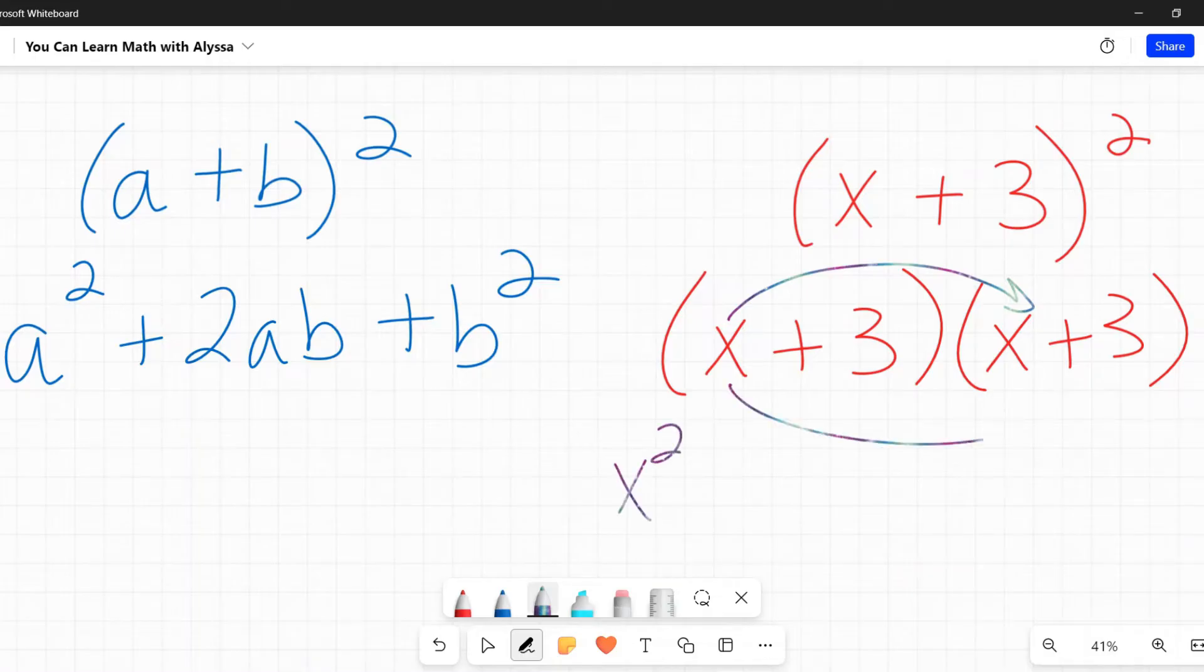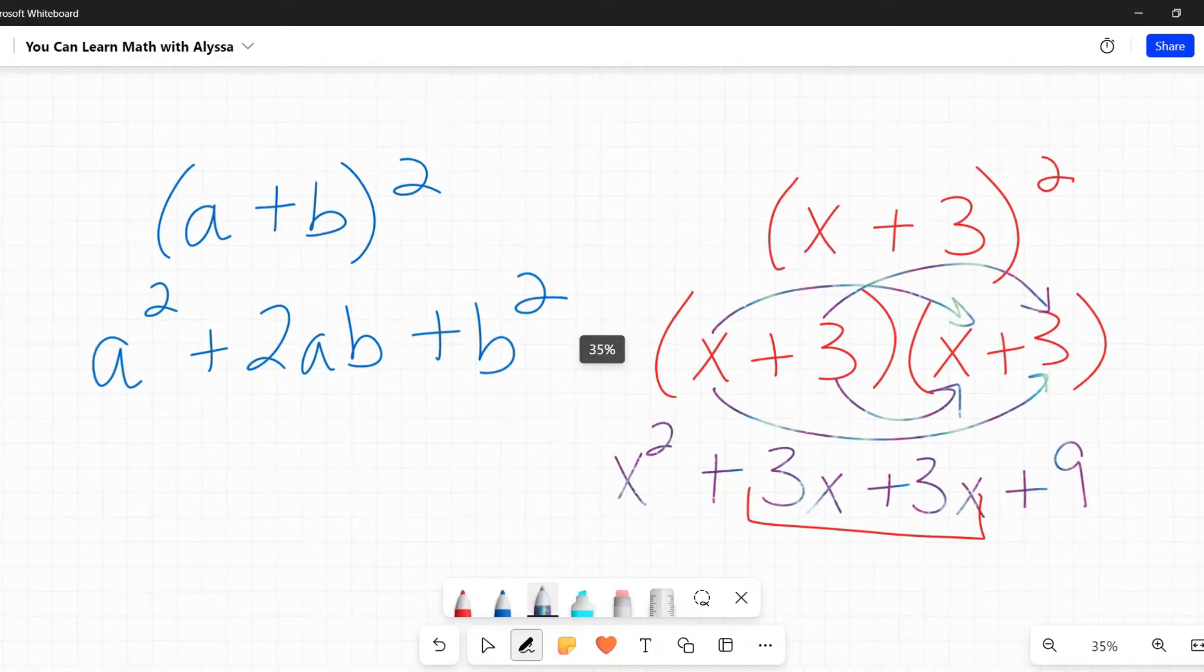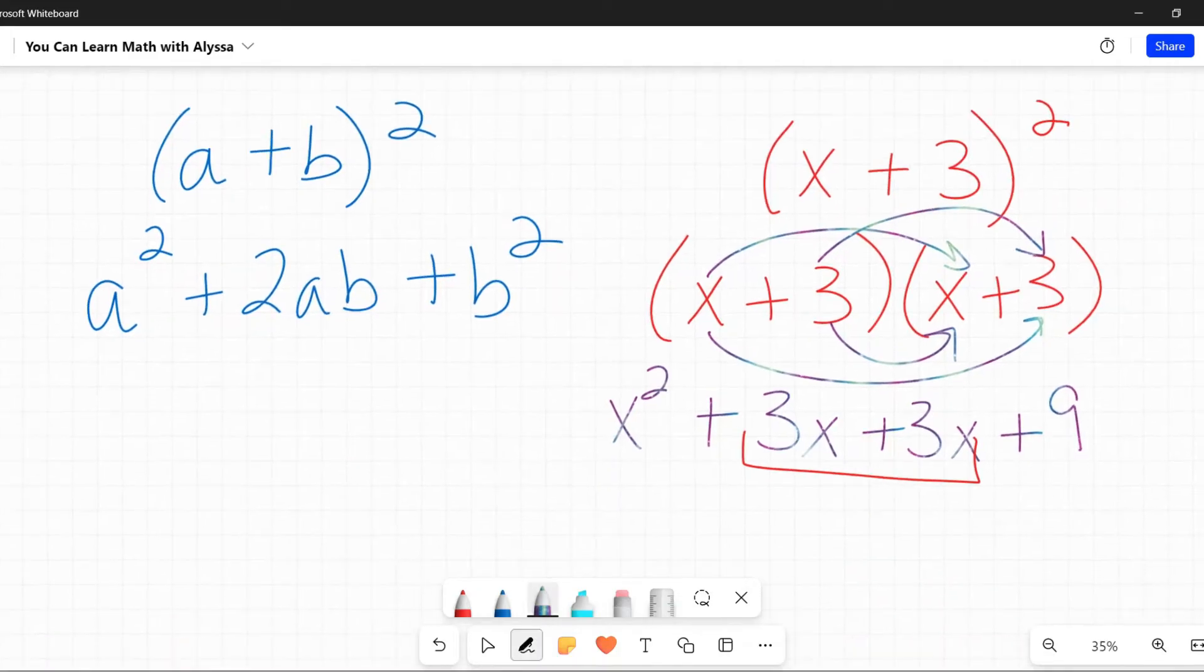When I have two binomials to multiply, I'm going to use FOIL. I'm going to multiply the first terms, x times x is x squared. The outside terms, x times 3 is 3x. The inside terms, 3 times x is again 3x. And then finally the last terms, 3 times 3 is 9.